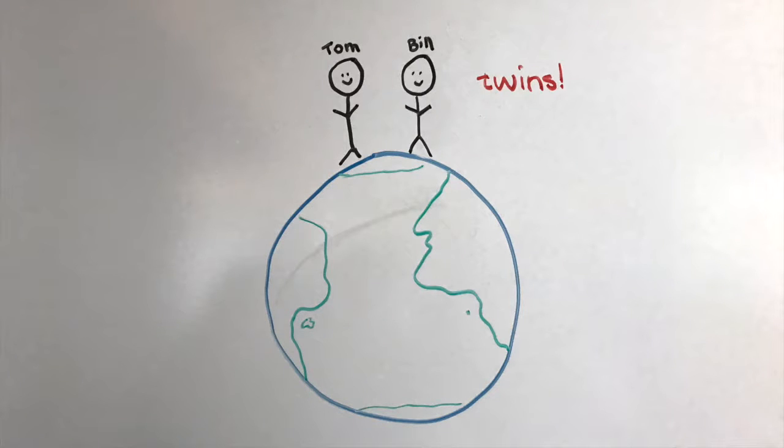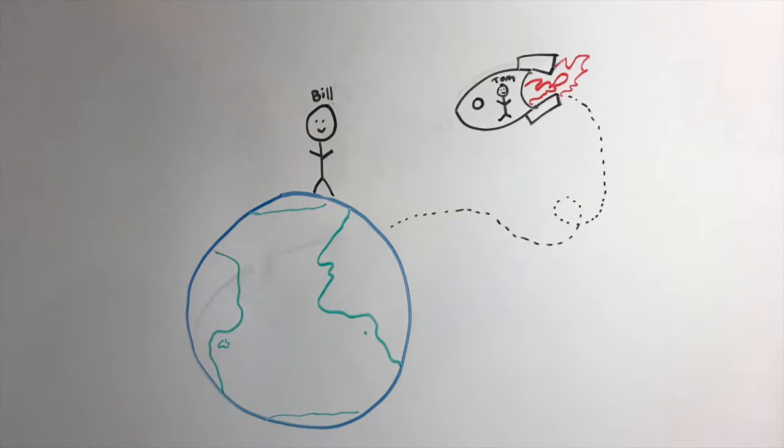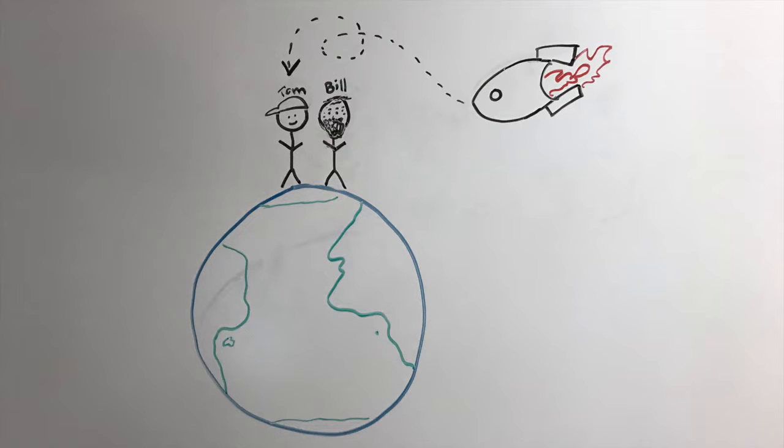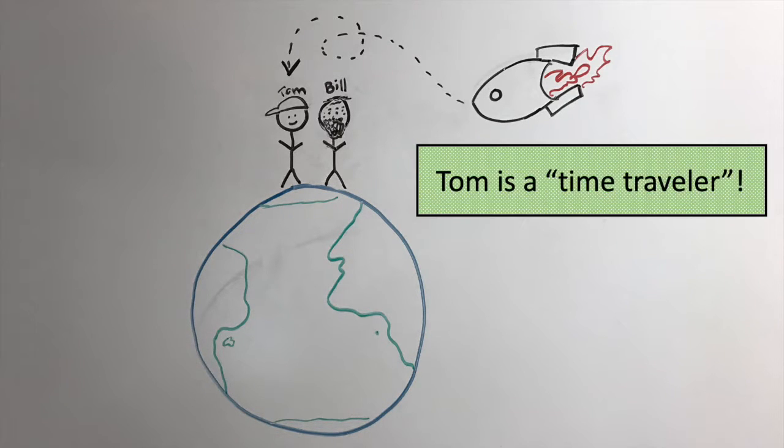Let's assume Tom and Bill are twins. If time is passing slower for Tom on the rocket ship due to time dilation, he's also aging slower. This means that when Tom and Bill reunite on Earth, Tom will be younger than Bill. In conclusion, Tom is a time traveler because he witnesses time passing fast on Earth without aging that much himself.